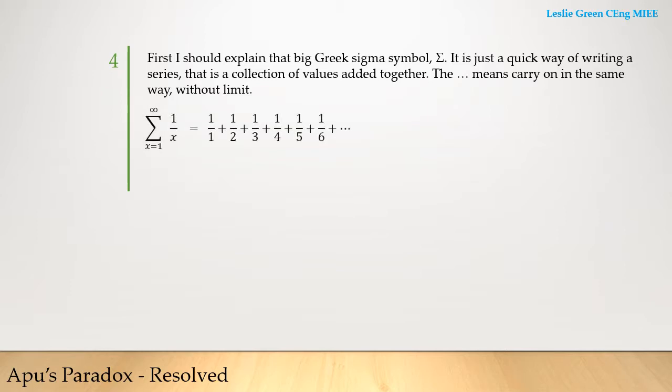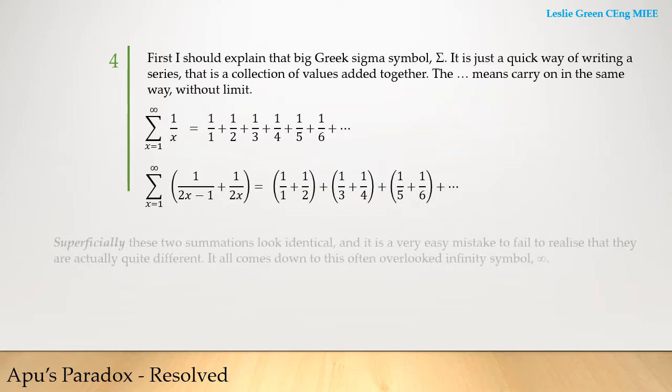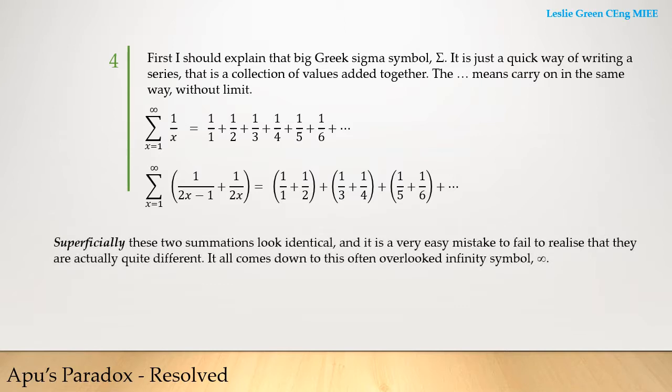The big sigma is just a shorthand way of writing out a series. It is very commonly used. When you write out what the big sigmas mean the values do look identical. The brackets don't have any mathematical function. They just show how the terms were generated.